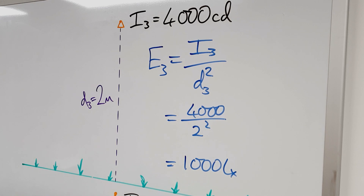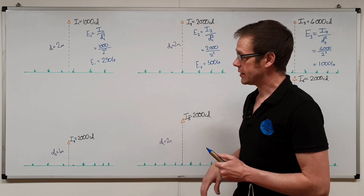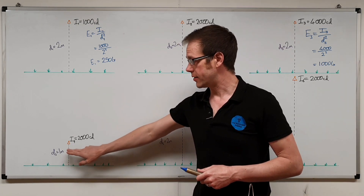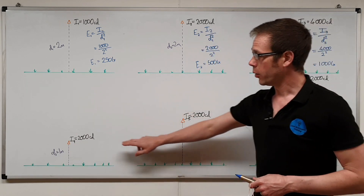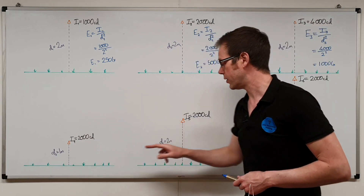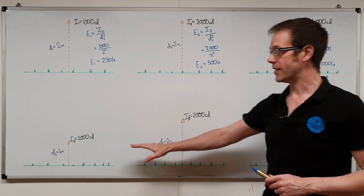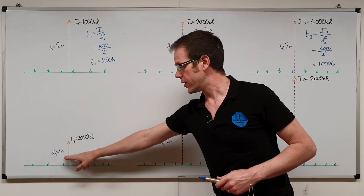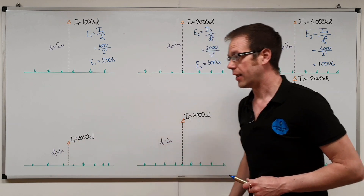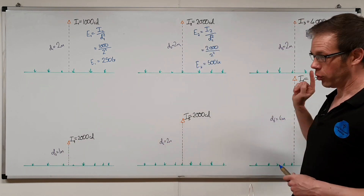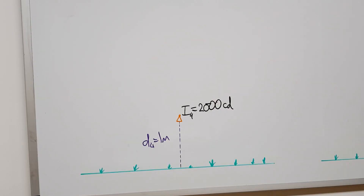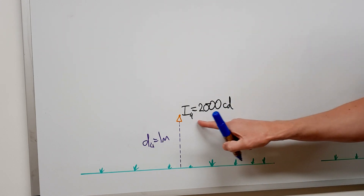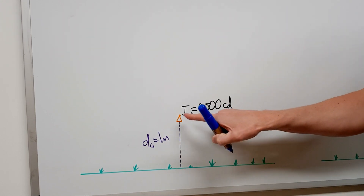Now let's look at changing the distance and see what difference that makes. In these three questions along the bottom, we're keeping the luminous intensity the same at 2000 candelas in each case — effectively the same light fitting — but changing the height it's mounted at: first one metre, then two metres, then four metres.